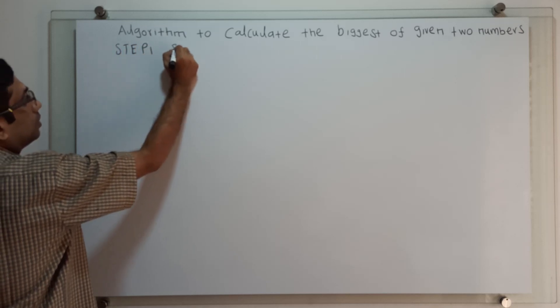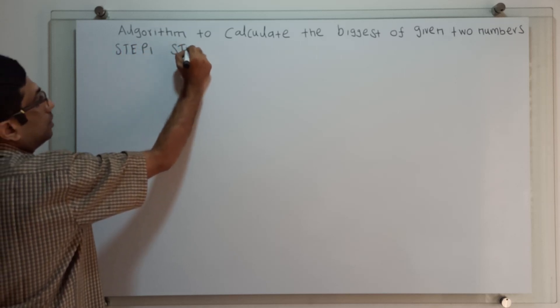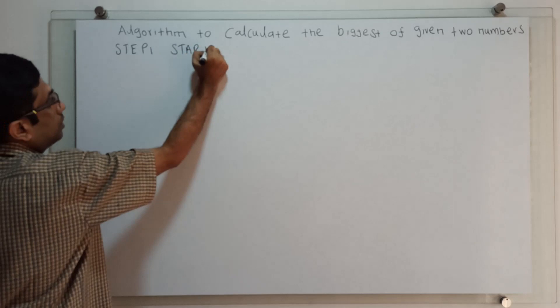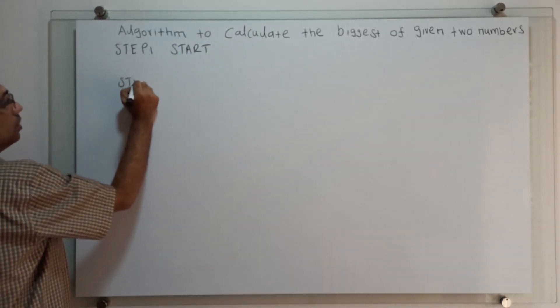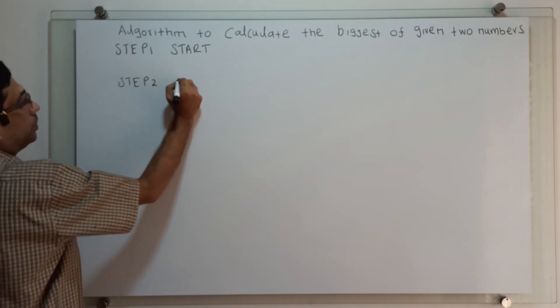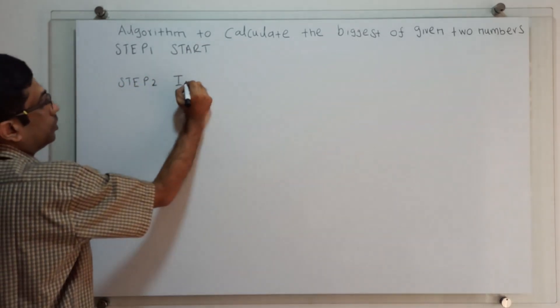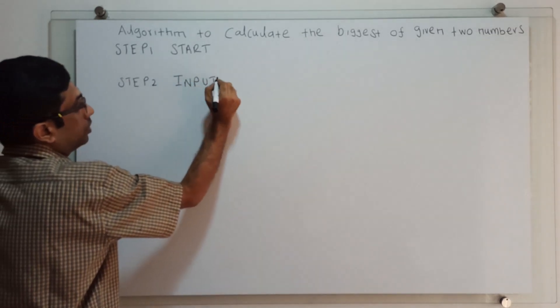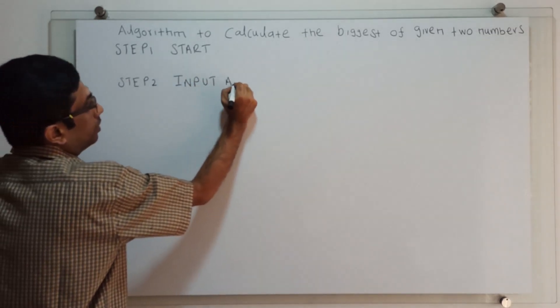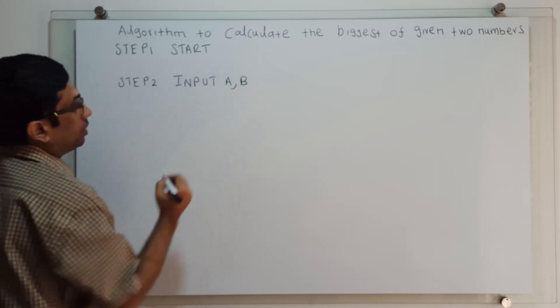Step 1: This is the logical start of the algorithm. Step 2: Input two numbers using variables A and B.